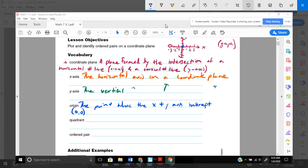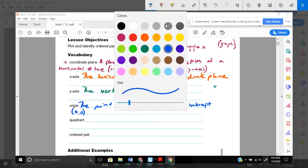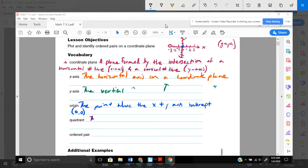The next term, hang in there, we're almost done, is quadrant. And that is the x and y-axis. So axis is singular, axes is plural. Divide the, and I'm going to abbreviate here, coordinate plane into four regions. Each region is a quadrant. So each region is a quadrant.